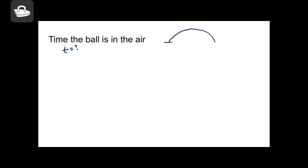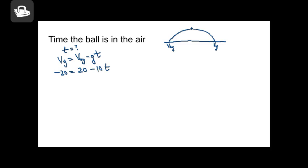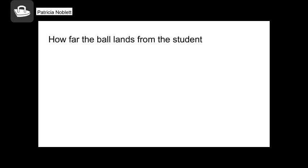Now let's find the time the ball is in the air. I can take advantage of symmetry and figure out the time to the top and double it, or I can use the fact that I know both the final and initial y velocities and use the velocity equation. Since I know my velocities and acceleration, I can solve for time: final velocity minus 20 equals initial velocity plus 20 minus 10 times t, giving a total time of 4 seconds.